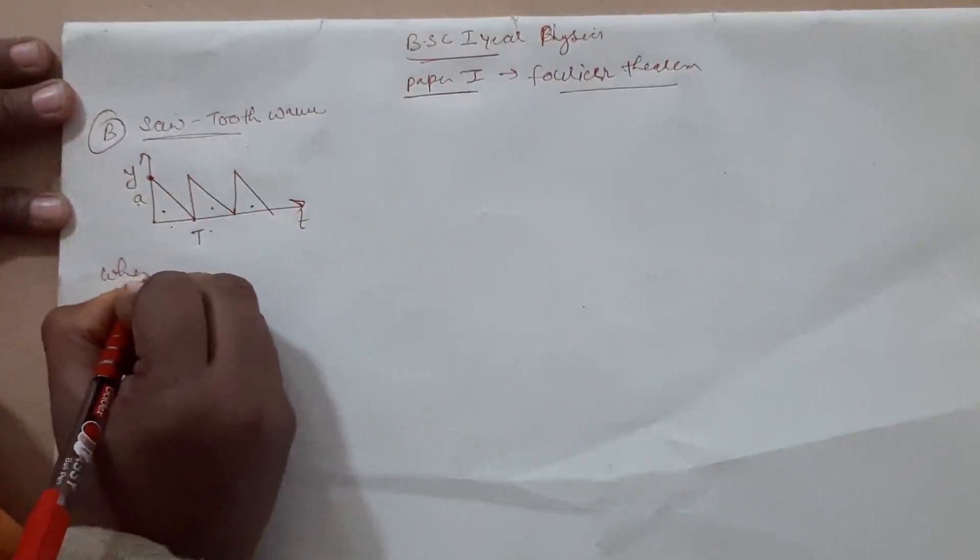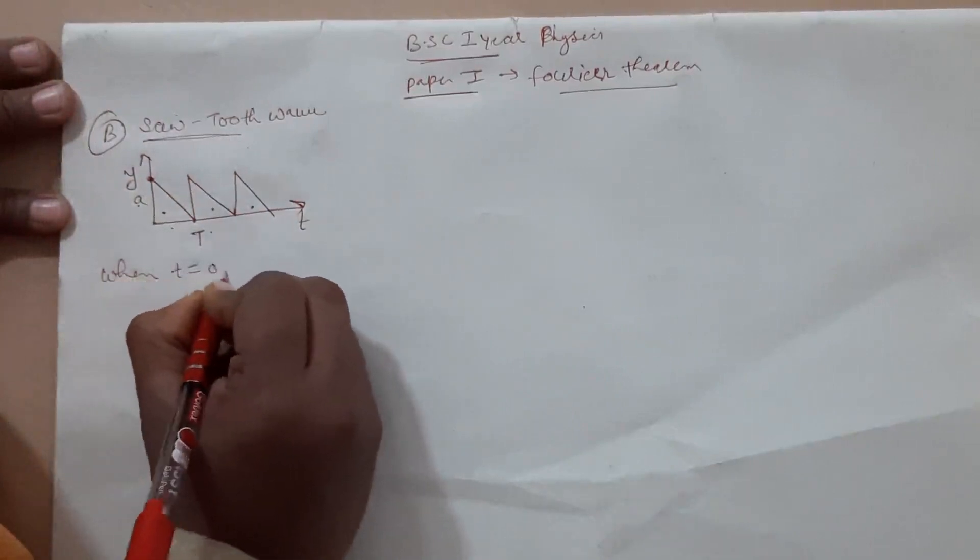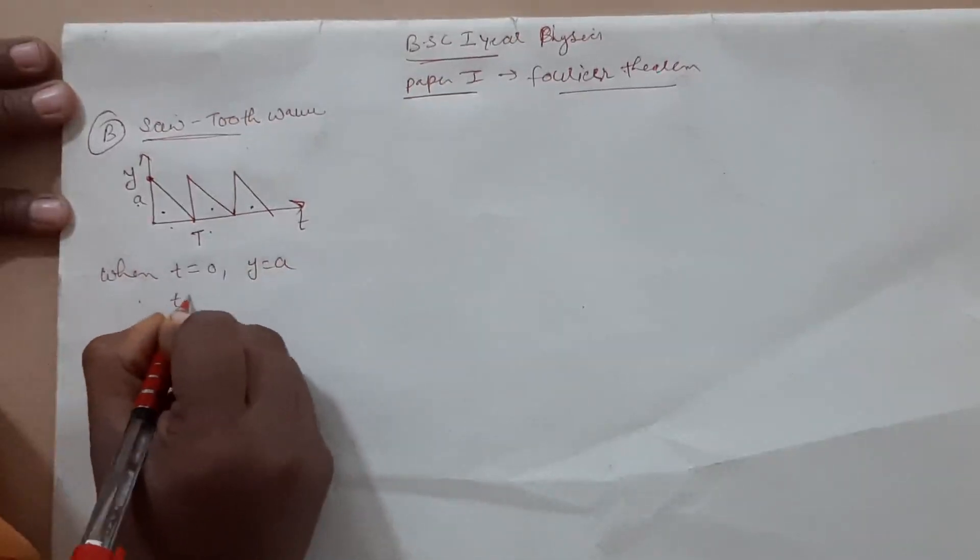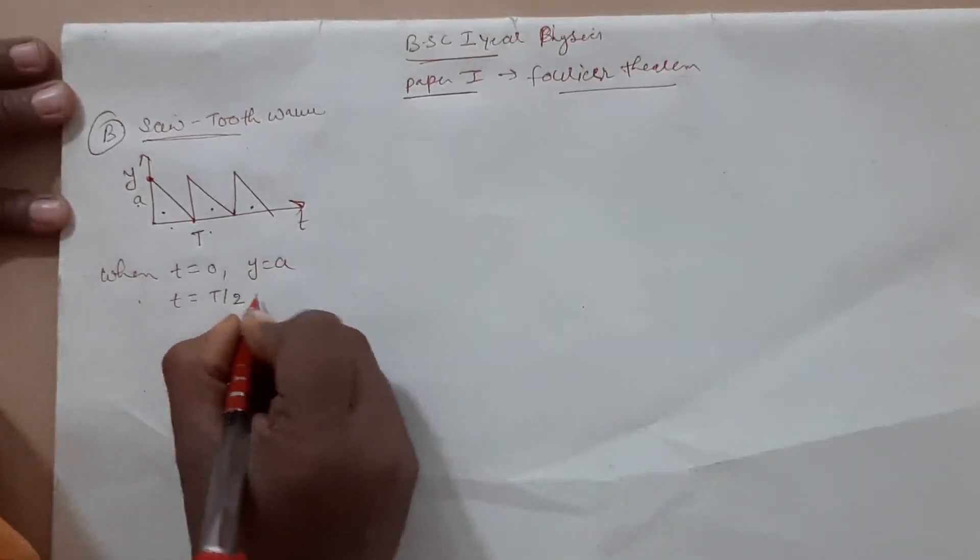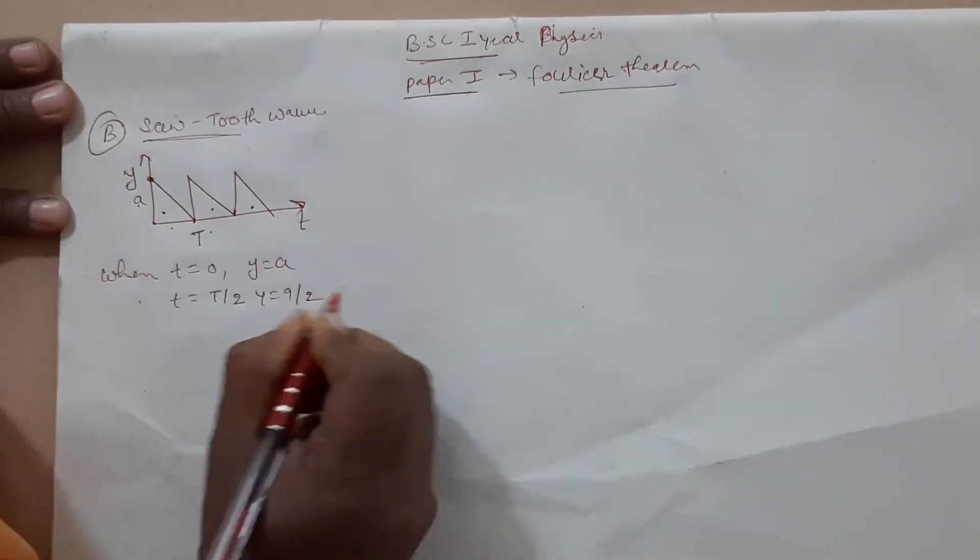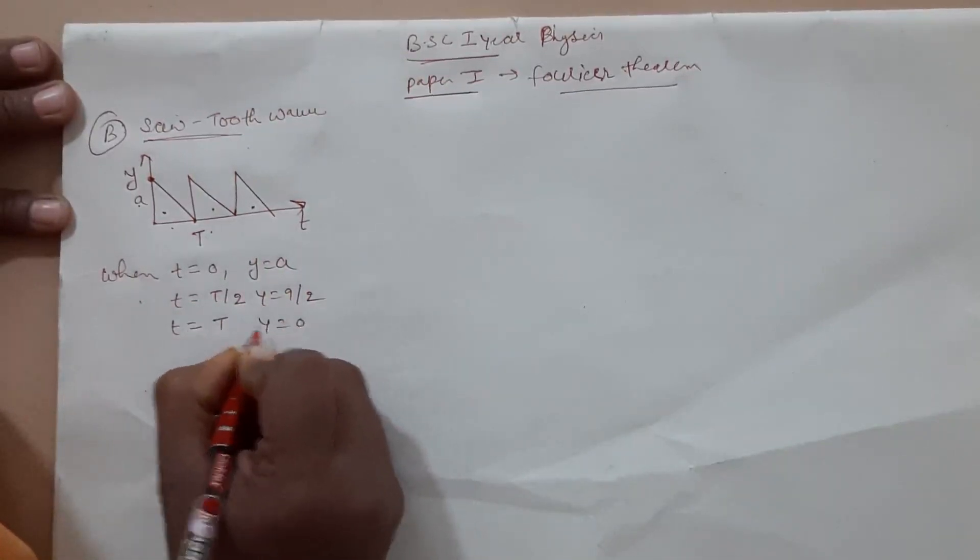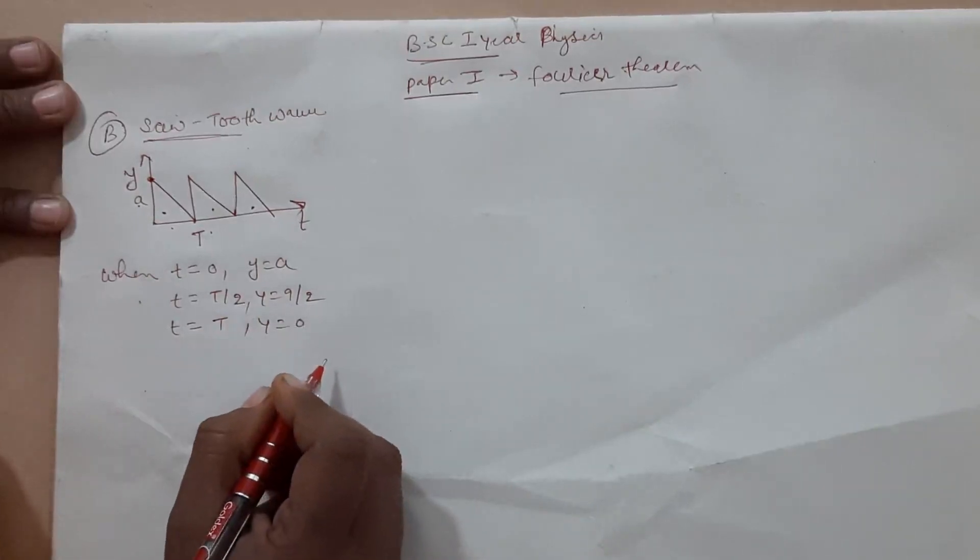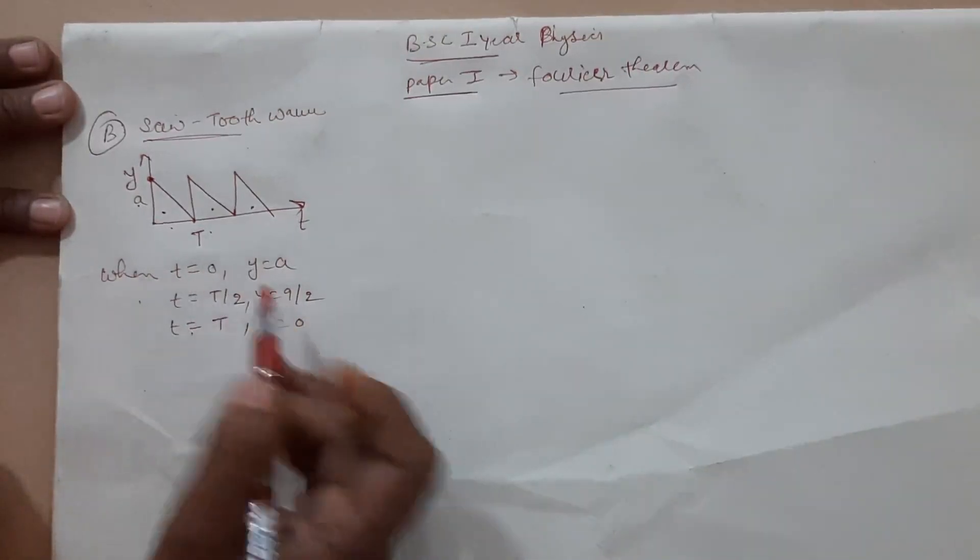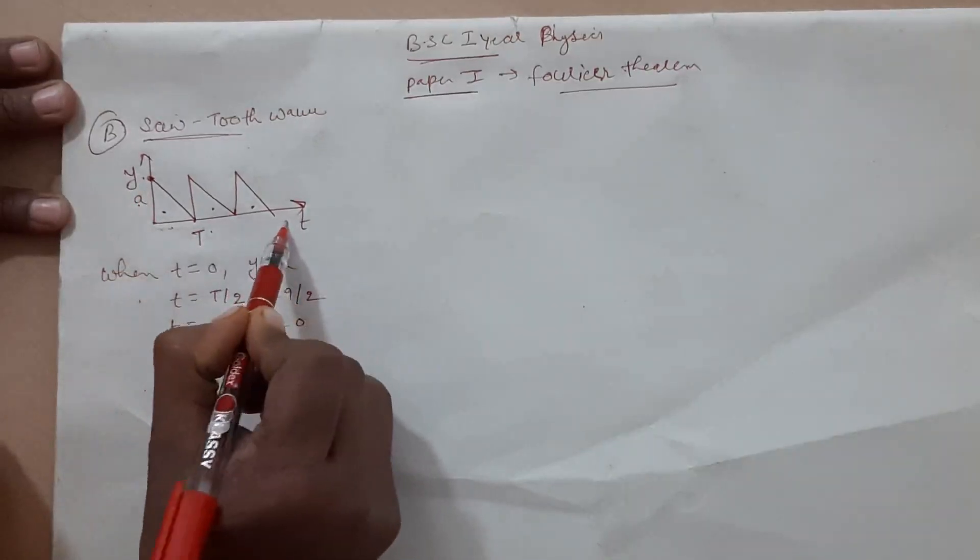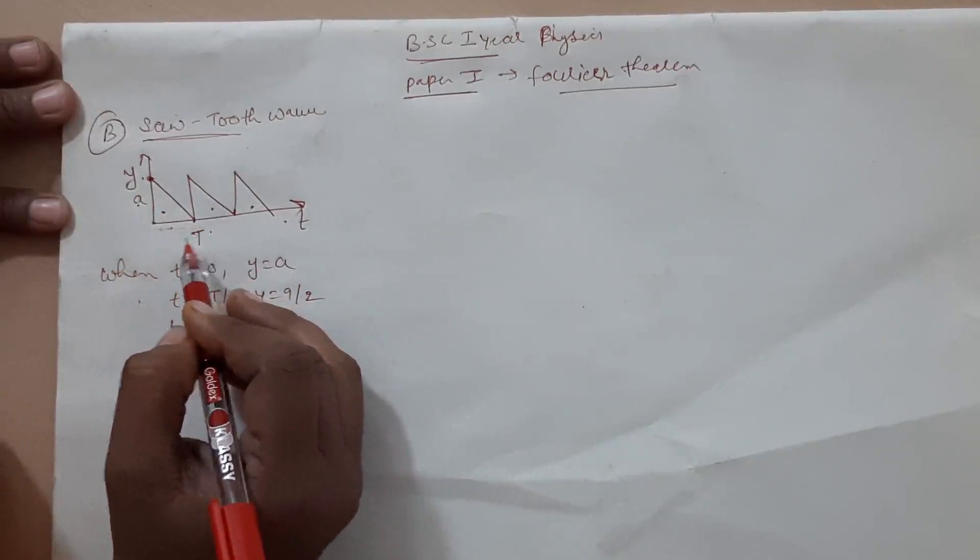Now, where T is equal to zero, then Y is equal to zero. Then T is equal to T by two, then Y is equal to E by two, and T is equal to capital T, then Y is equal to zero. It means that Y is decreasing linearly with the time T. Y is linearly between T.